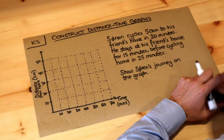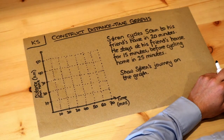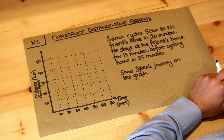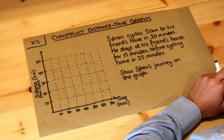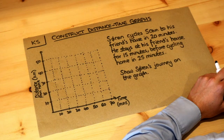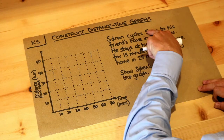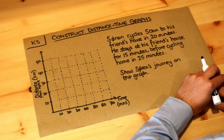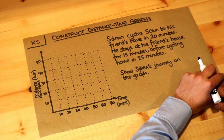Soren cycles 50 kilometres to his friend's house in 20 minutes. He stays at his friend's house for 15 minutes before cycling home in 25 minutes. I'm very impressed that anyone could cycle 50 kilometres in 20 minutes.